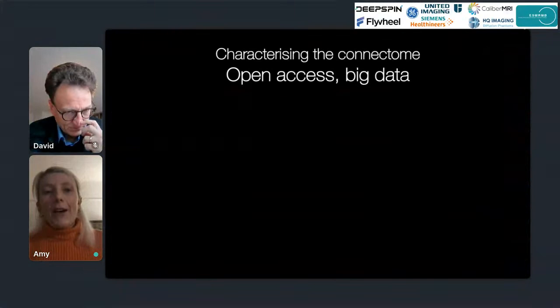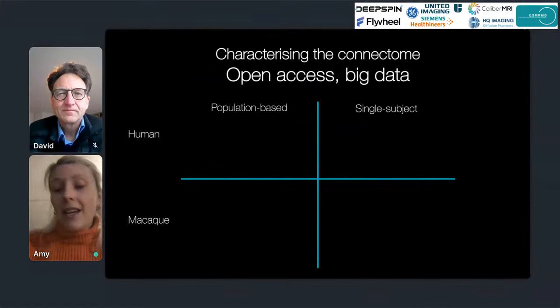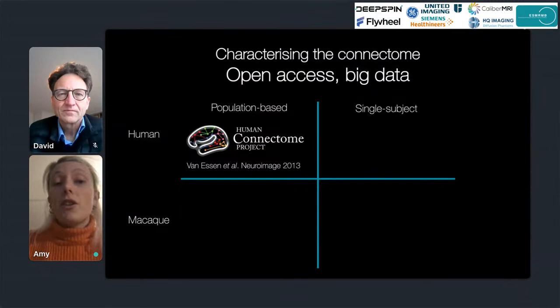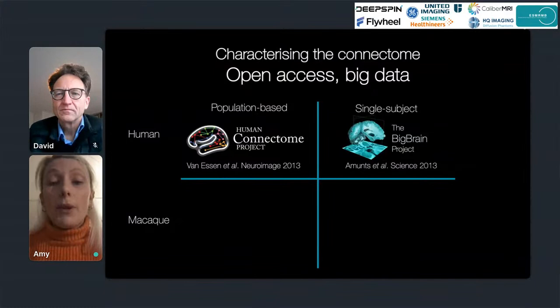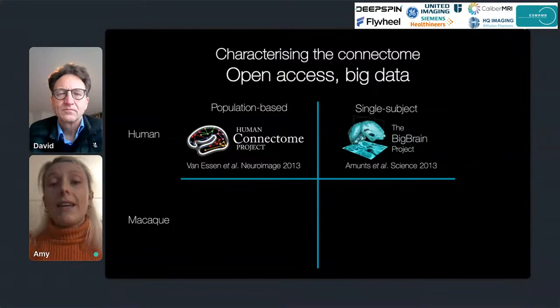Our ability to characterize the connectome has been greatly advanced by access to big data, but there are multiple ways in which data can be big. Firstly, it can look across a population at between-subject variations, such as within the 1,200 subjects scanned as part of the Human Connectome Project. Alternatively, big data can characterize a single brain in exquisite detail — a beautiful example being the BigBrain project, where a single post-mortem brain was sectioned consecutively and reconstructed into a beautiful 3D microscopy volume.